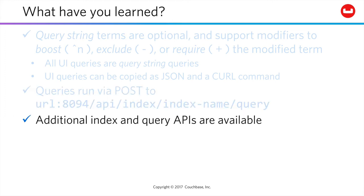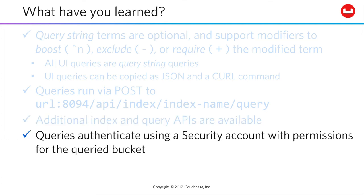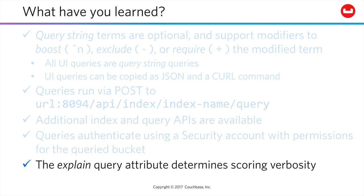Additional REST APIs are available for maintaining your indexes, running your queries, monitoring performance, and more. Your REST API calls must authenticate using a security role with appropriate query and/or administrative permissions. And you can include an explain attribute in queries to get verbose detail about term scoring within your queries. You can also set it to false if you want to reduce the output a little bit.